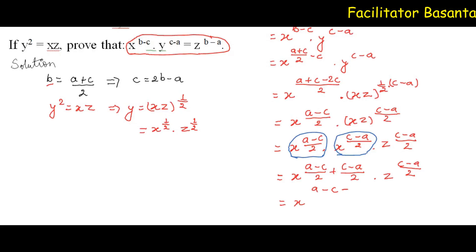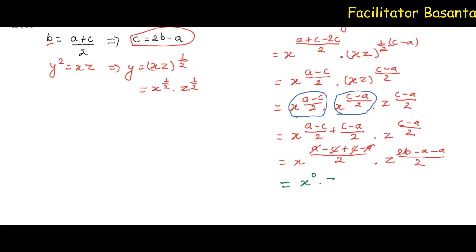It will be A minus C plus C minus A, whole divided by 2, which equals zero. So X to the power 0 equals 1. Now we need to express Z in terms of B and A. Z to the power C minus A divided by 2 — C can be expressed as 2B minus A. That gives Z to the power 2B minus A minus A divided by 2, which is Z to the power 2B minus 2A divided by 2.